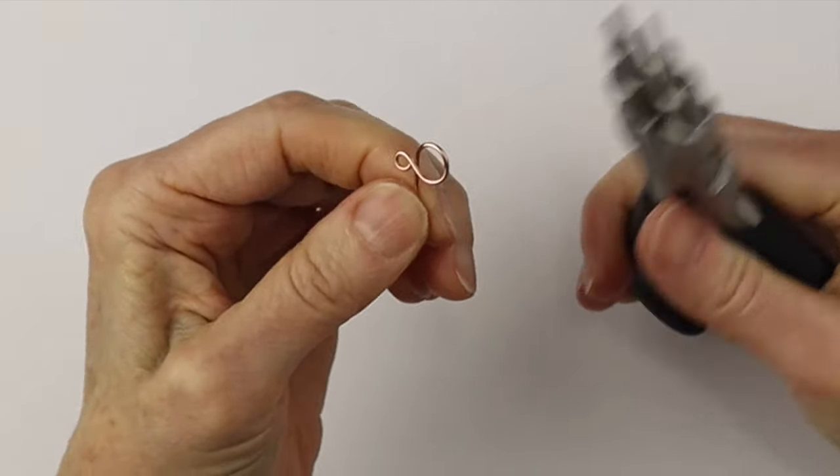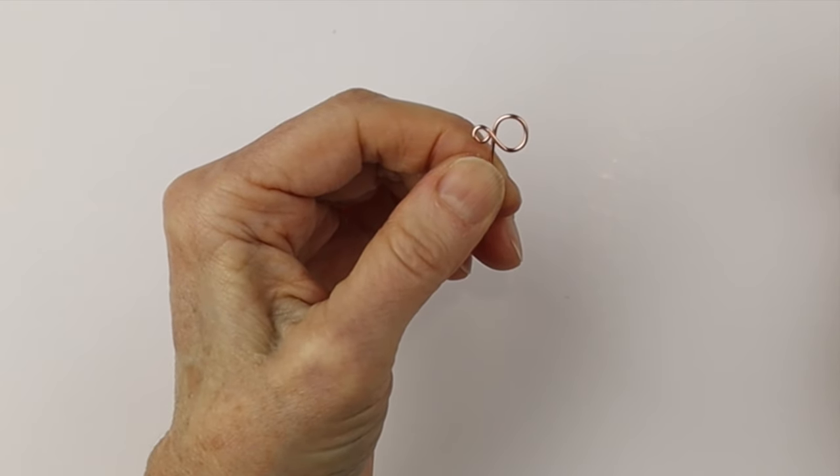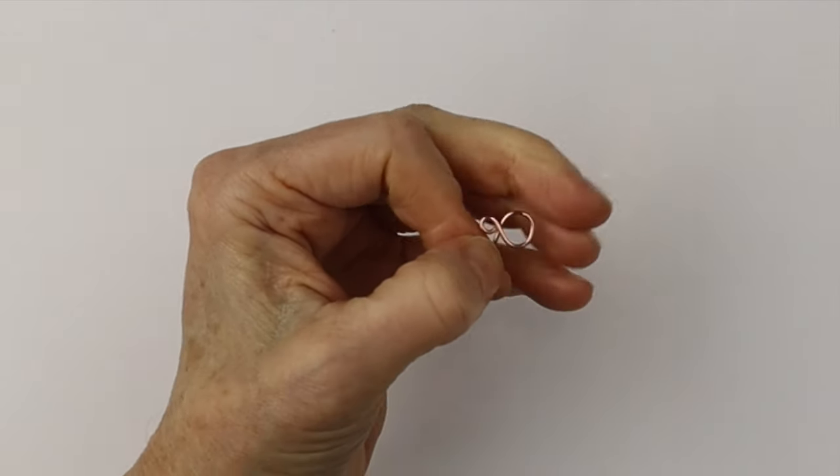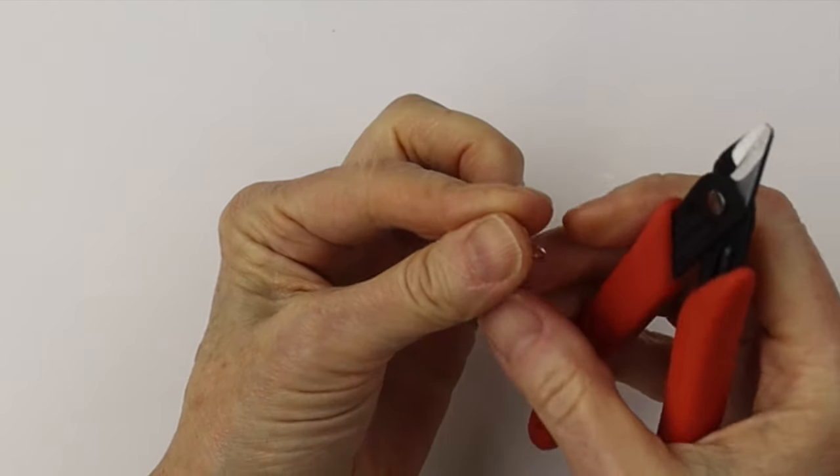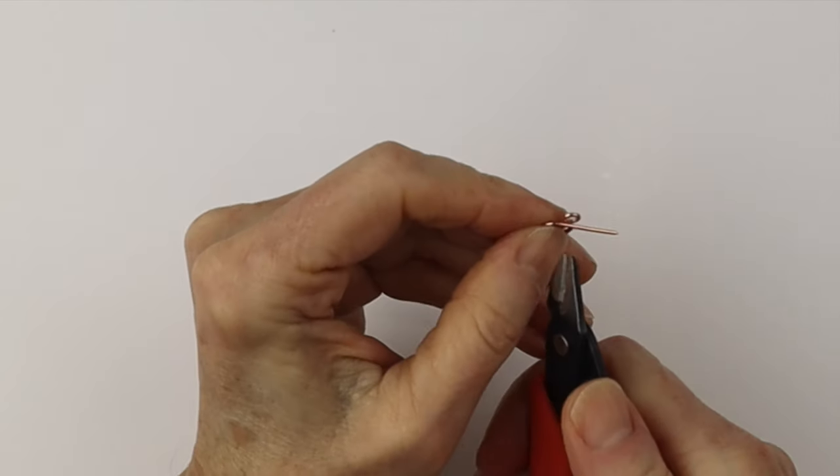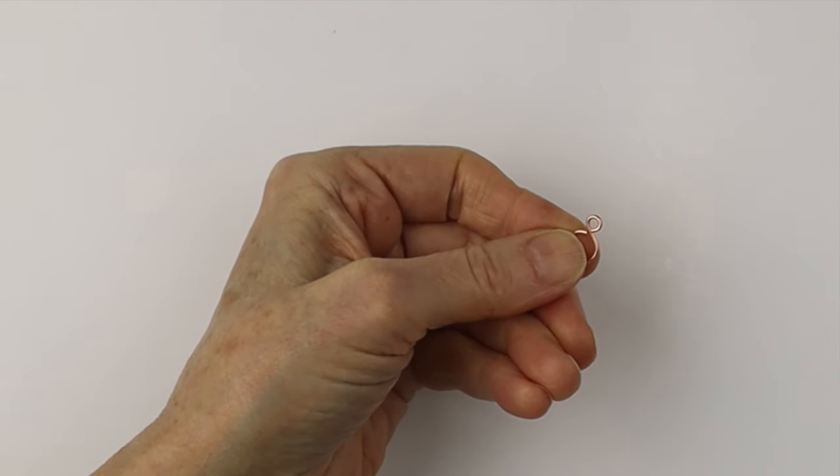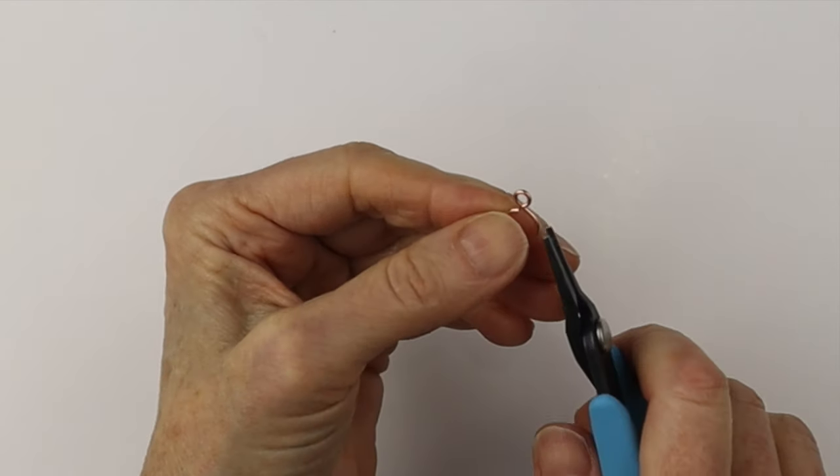With the larger area of the looping pliers it looks a bit like an infinity sign. Then we need to clip the ends so they are flush. Just give it a little clip to close that up and we're going to use our tweezer nose.